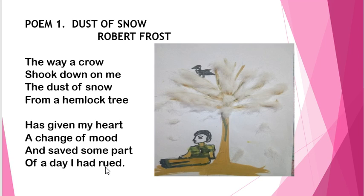In this way, we can see that such small incidents — like the dust of snow falling on the poet — can change his mood. So small incidents in life also have great significance. The poet also wants to convey through this poem that we should see the brighter side of life. He himself was lost in depressive thoughts and seeing the darker side of life, but with the snow particles his attitude changes and he becomes optimistic.